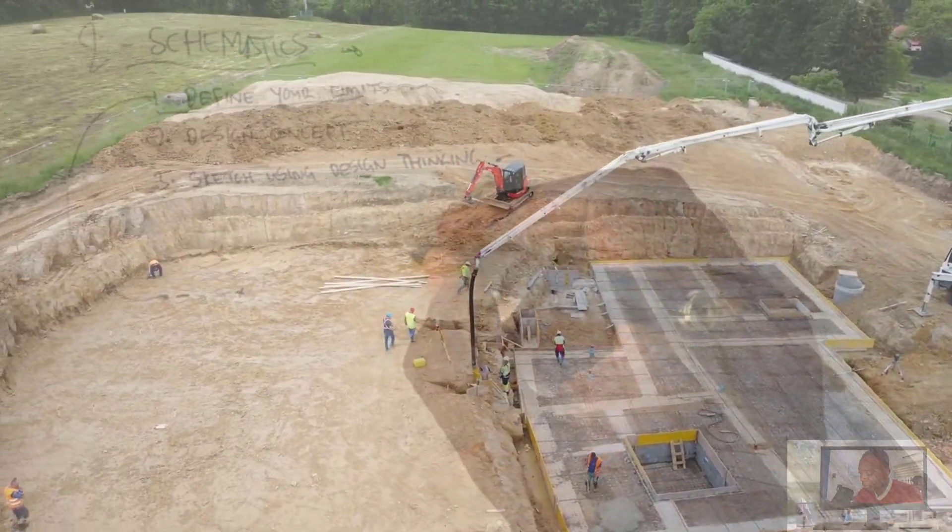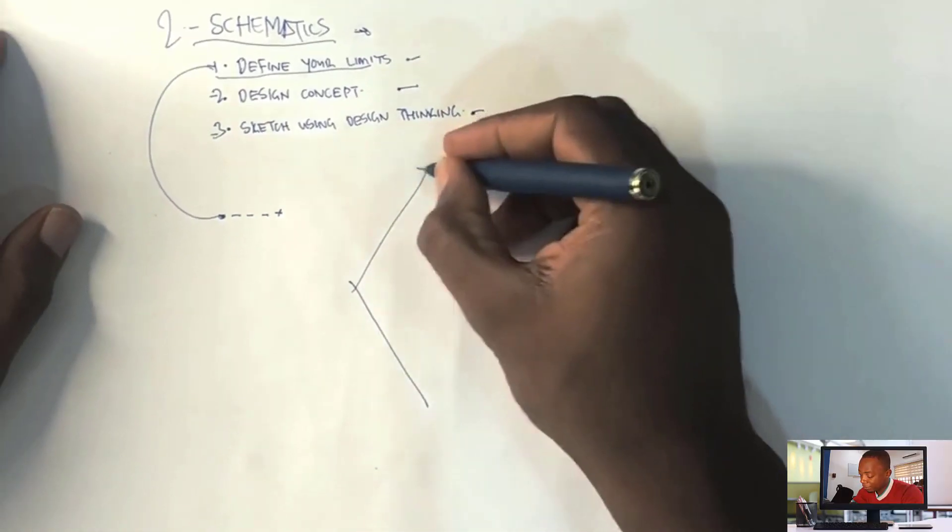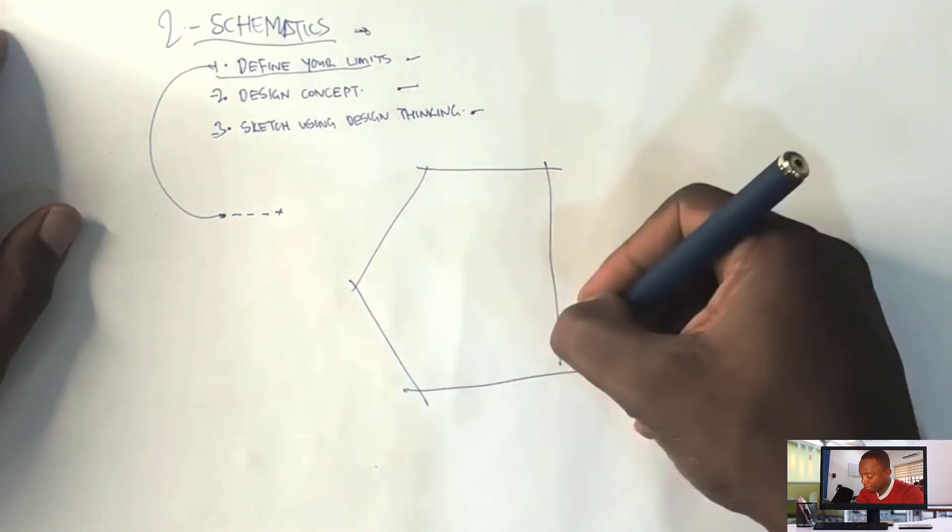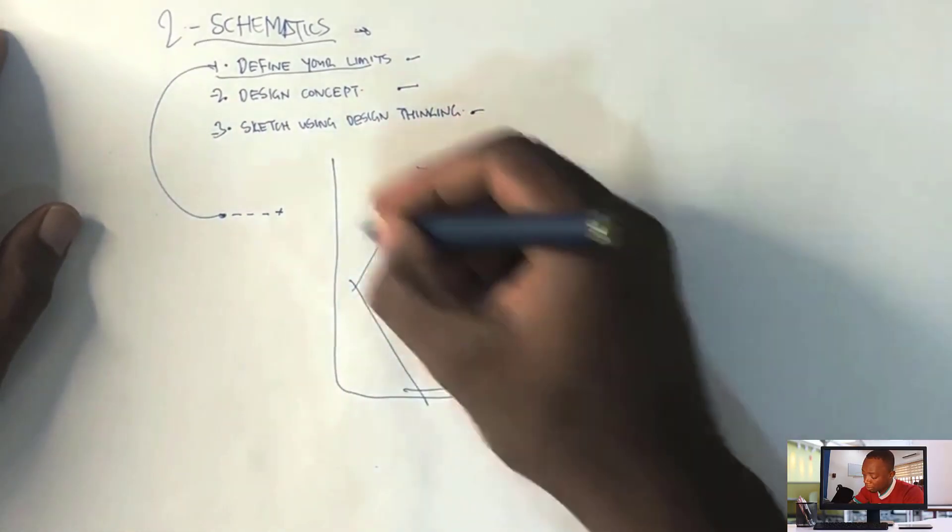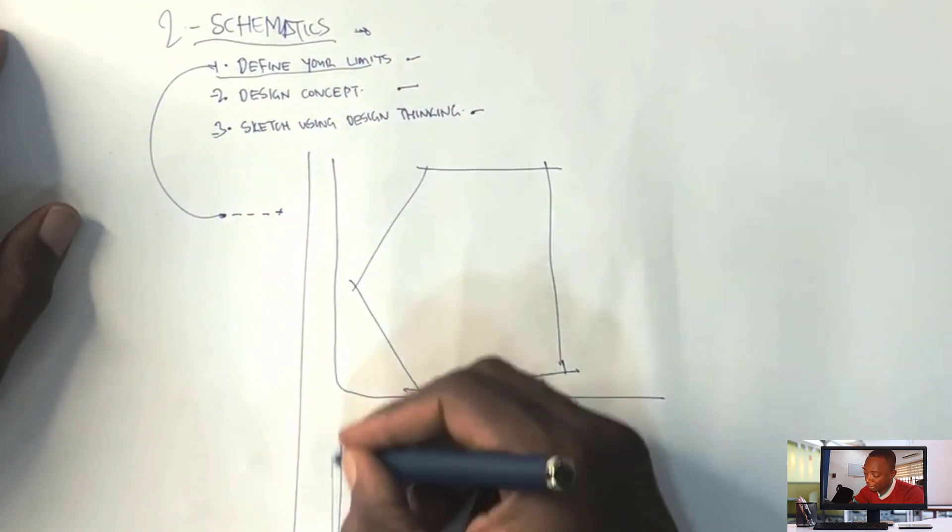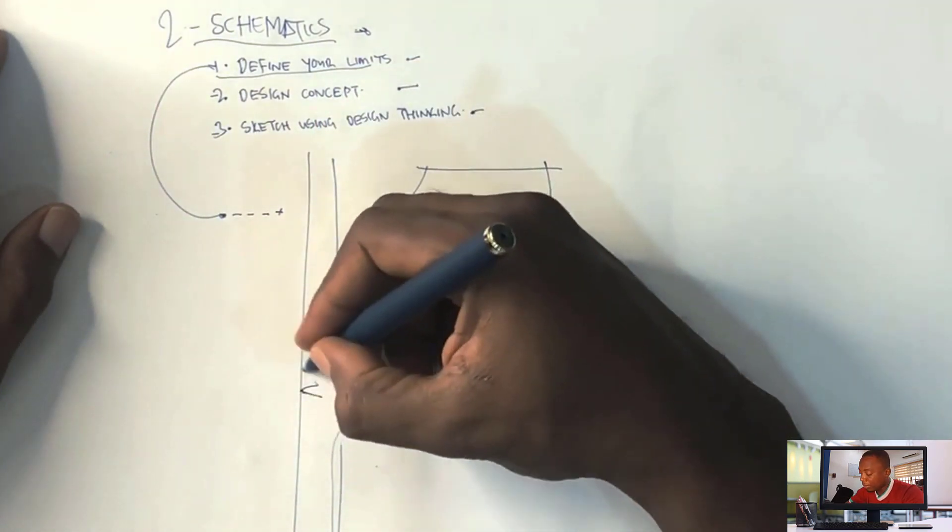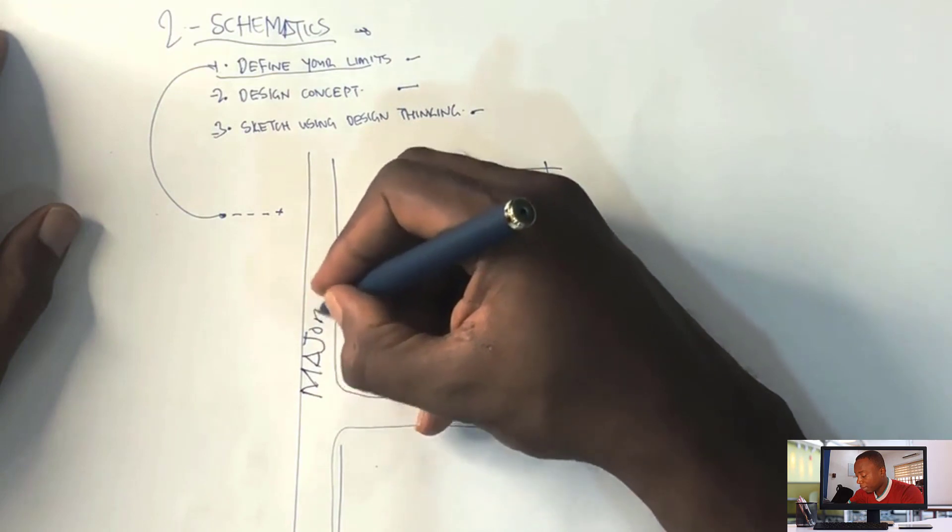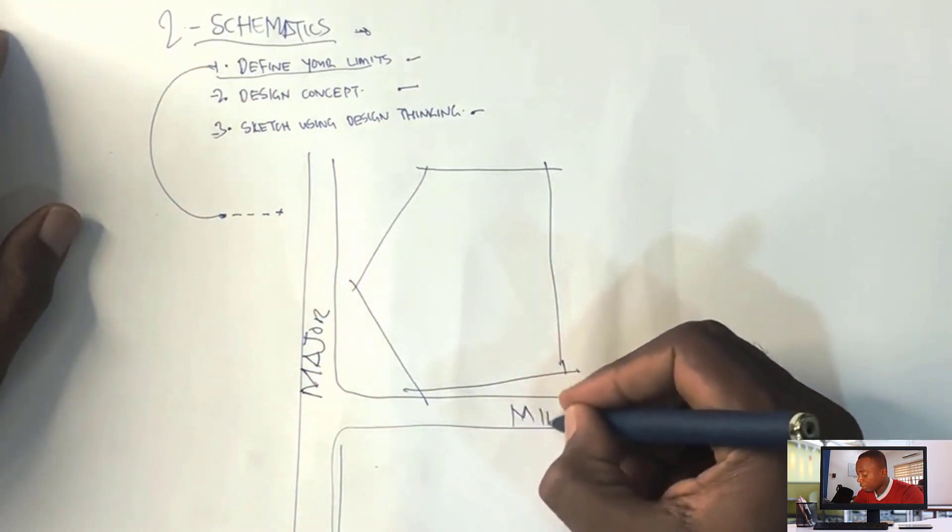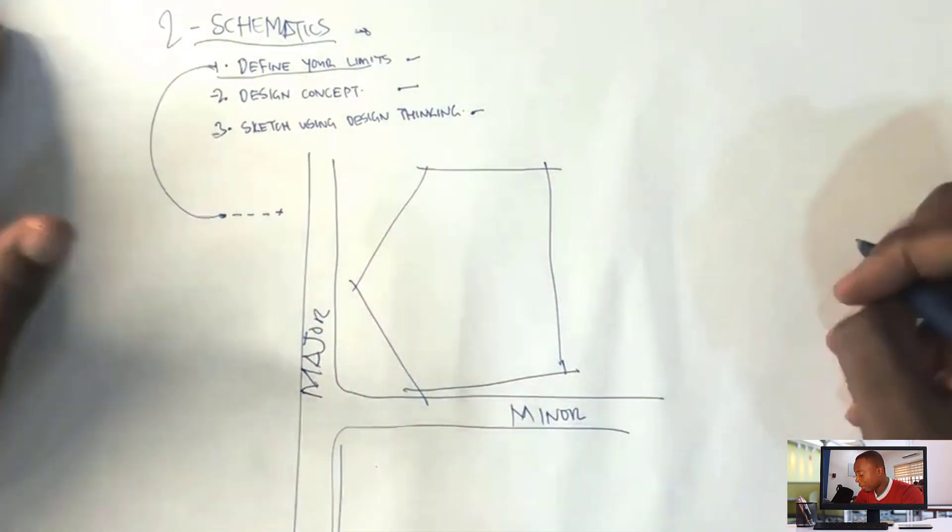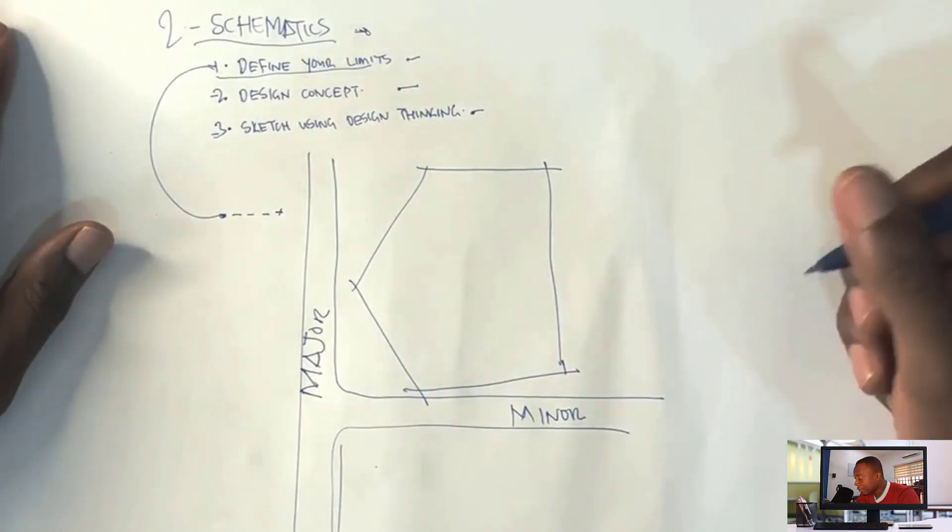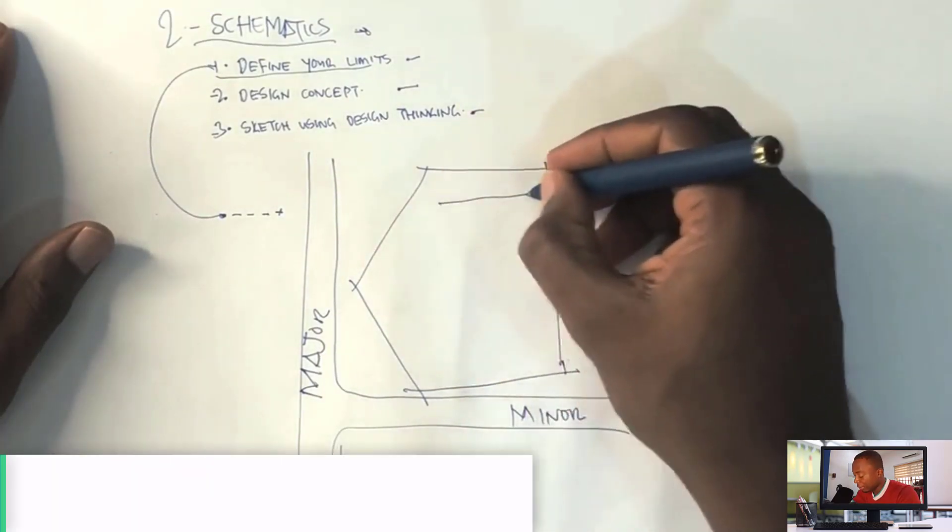So we have this site that we've been given. It's oriented this way, and then we have two access roads around the site, one major and one minor. This is how our site looks. The first thing we want to do is get a buildable area, which we've done already in the design stage.